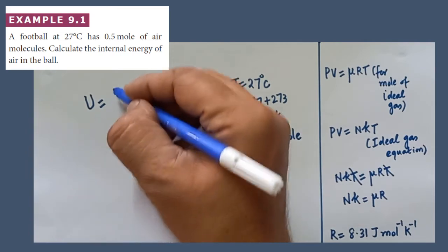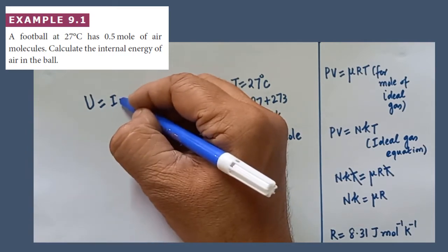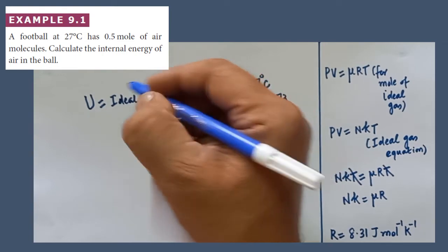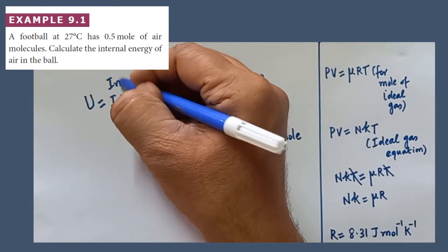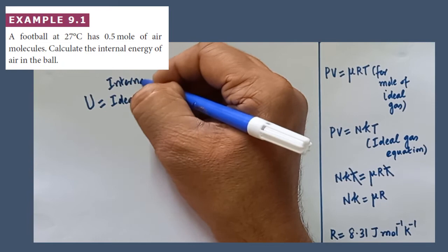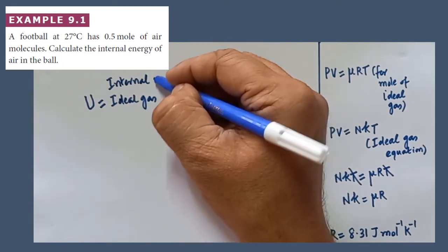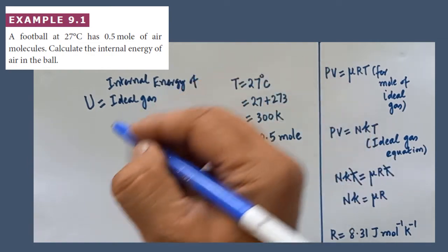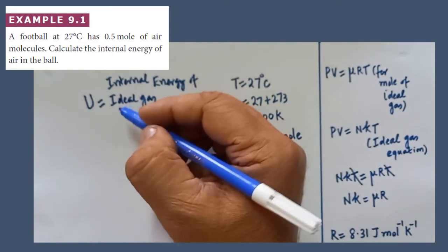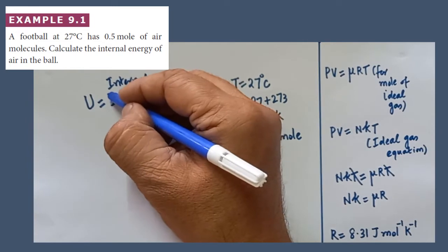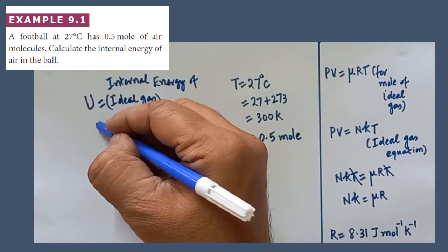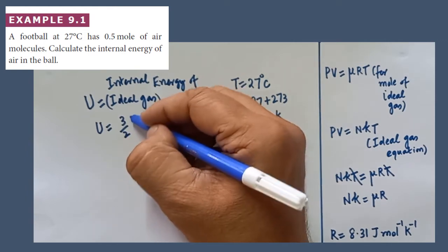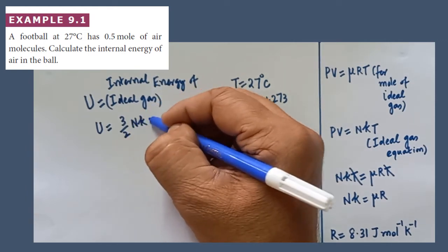U is a symbol for internal energy, ideal gas, internal energy to be found out. Internal energy of the ideal gas formula already known. U is equal to 3 by 2 NKT is the formula.